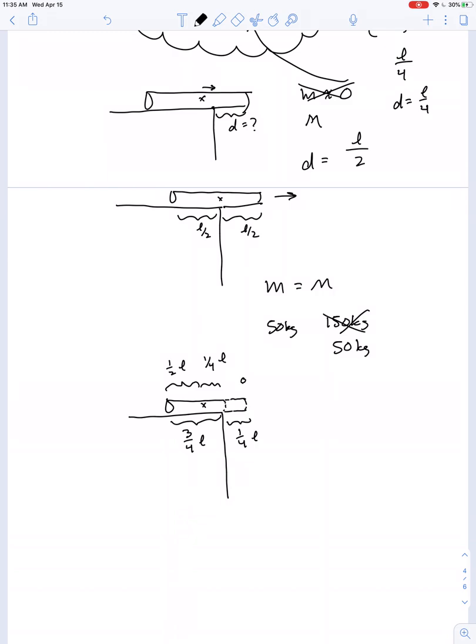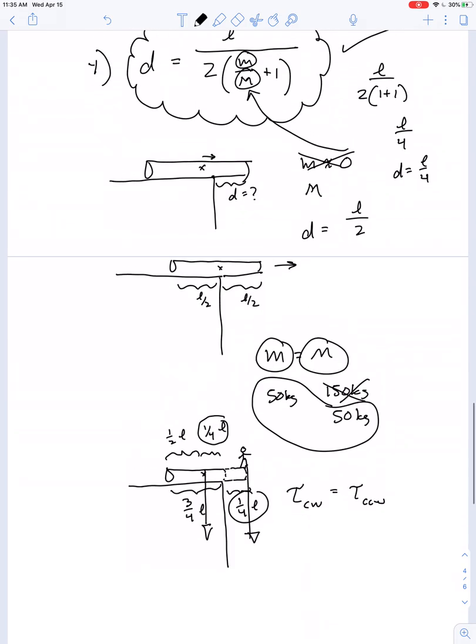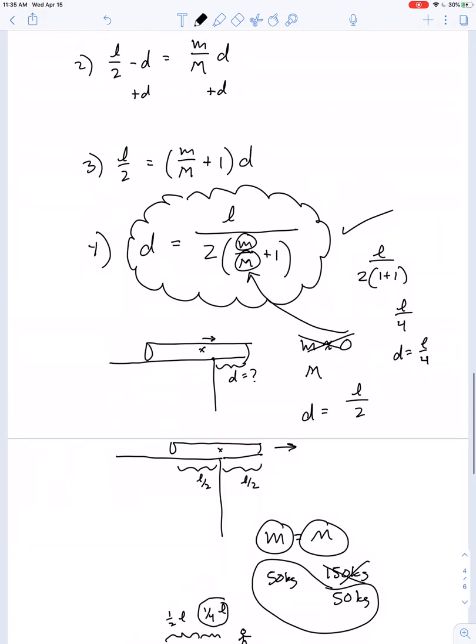So if the person walks all the way to the edge, their lever arm is 1 quarter L. That's their weight vector. The lever arm for the weight vector for the log is also 1 quarter L. Both the weight vectors are equal length because of our suggestion that the masses are equal. And so you can see this would definitely be a case where the clockwise torque and the counter clockwise torques are balanced. So you can think up any mass ratio you want. We found an equation that will tell us what distance of the log has to stick out over the edge if the person is going to walk all the way to the edge.